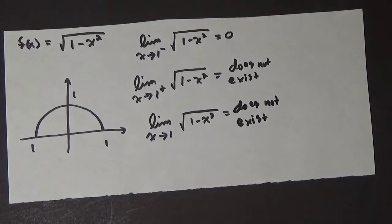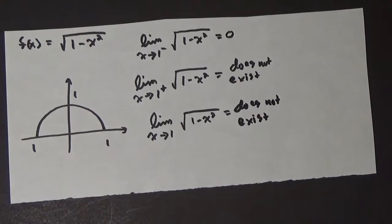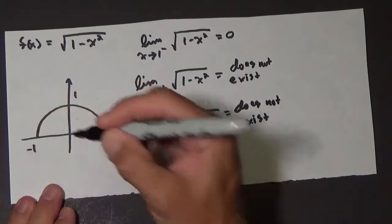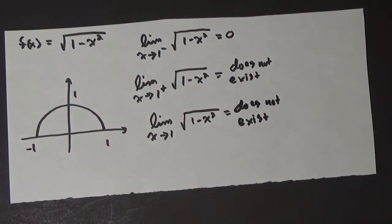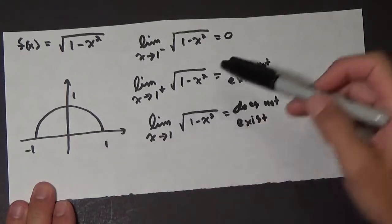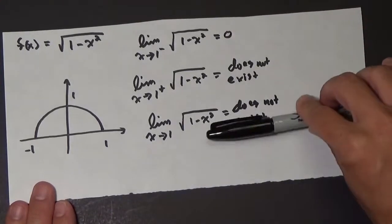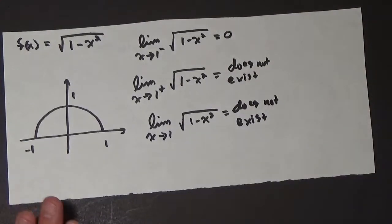We were able to answer this question about what's happening when we get to basically this endpoint there. We could do the same thing for negative one over here. But the idea is with these one-sided limits, sometimes these one-sided limits do help us answer this question: does the limit exist?